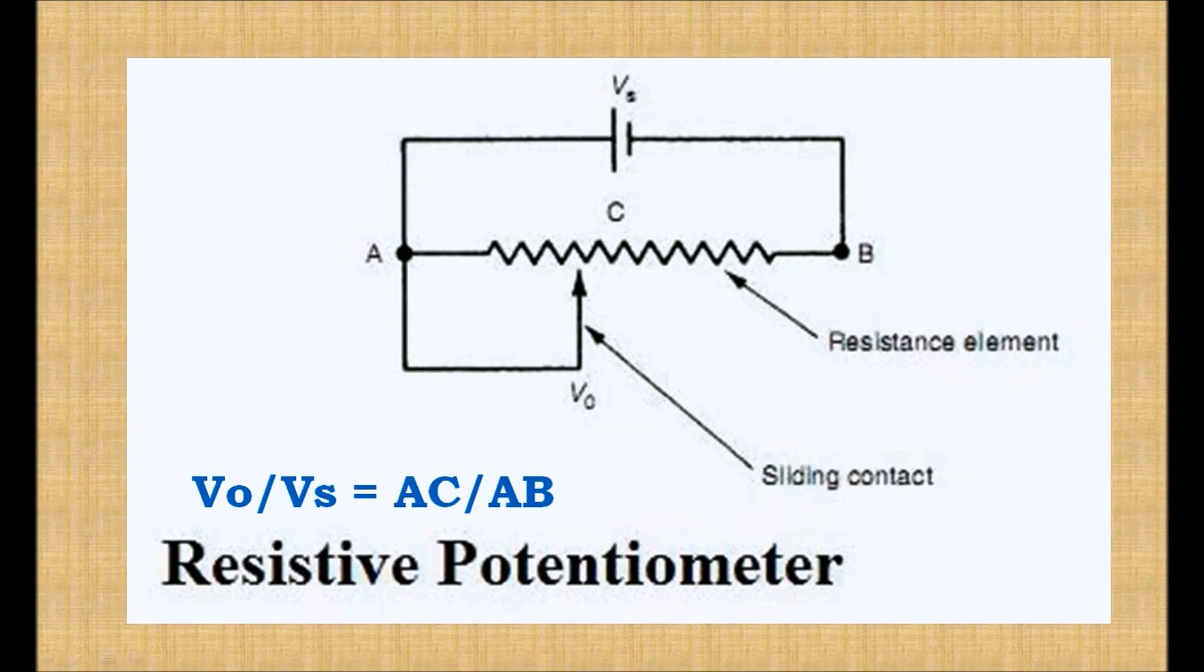The relationship between the length of the conductors and the voltage across them can be expressed as: VO divided by VS equals AC divided by AB.